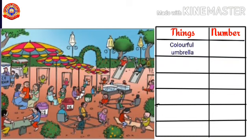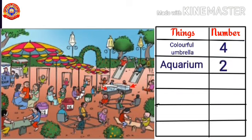At first, colorful umbrellas: 4. Next, aquarium: 2. Then swing: 5. Students, which are the other things we can see in the park?